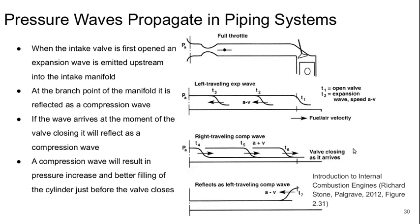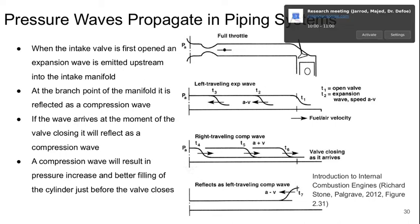The compression wave reflects again and results in a pressure increase in the cylinders, giving better filling of the cylinder just before the valve closes. Essentially it's a way to temporarily bump up the supply pressure just before the valve closes — when there would tend to be very little flow — in order to get a little extra air into those cylinders. That's how we take advantage of those resonance effects in practice. We'll move on and talk about propellers in the next lecture.